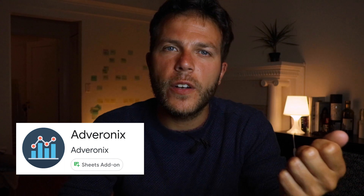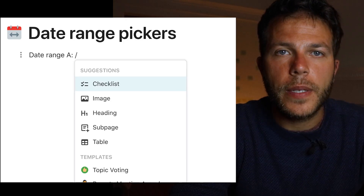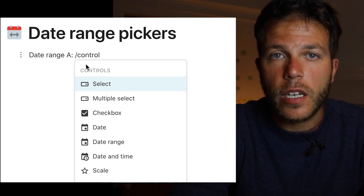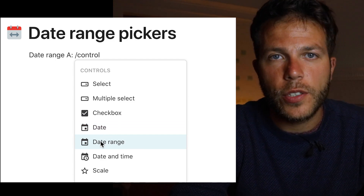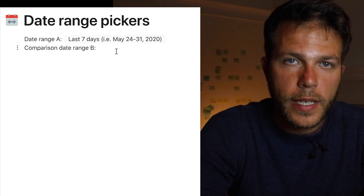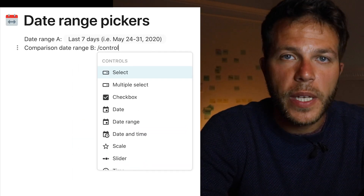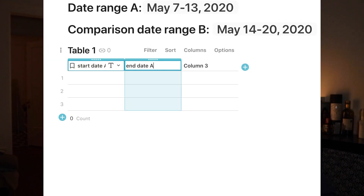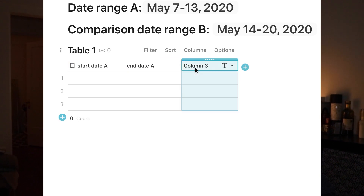The first thing I need to do is push the data into Coda. Adverenix needs to know the date range, so I'm going to create two date range pickers in Coda — I just type a slash, then Ctrl, then date range. I do that again for the second date range picker so I can compare two periods of time. Then I save the data from the date range pickers into a table: one column for the start date and one for the end date, repeated for the comparison period.